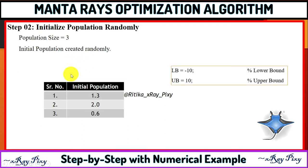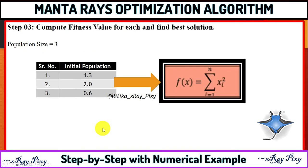Now we initialize the population randomly. For the three search agents, we initialize the population randomly and all the values are within the bound. You can check the lower bound and upper bound — all the values are within bound.